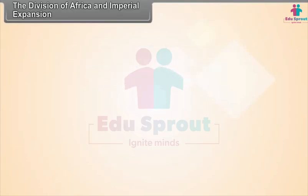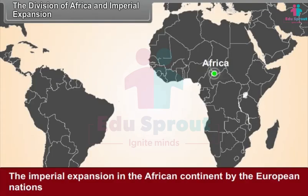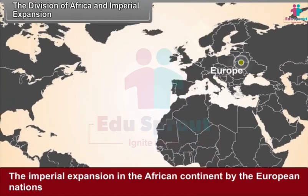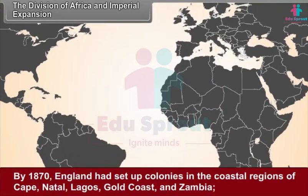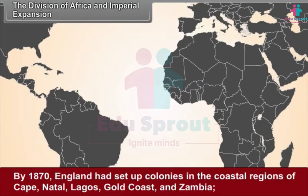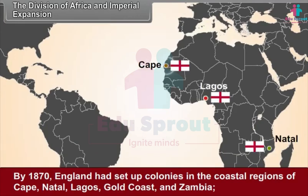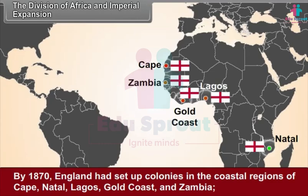The Division of Africa and Imperial Expansion. The imperial expansion in the African continent by the European nations is supposed to be one of the significant events in the history of the world. By 1870, England had set up colonies in the coastal regions of Cape, Natal, Lagos, Gold Coast and Zambia.